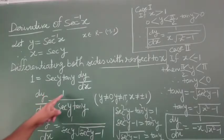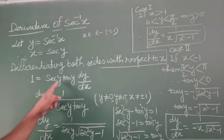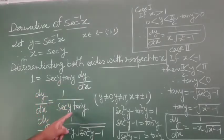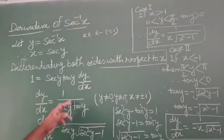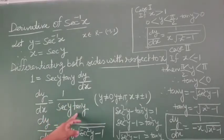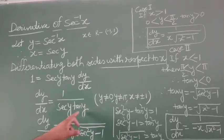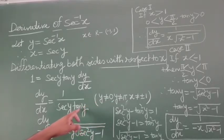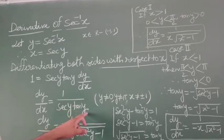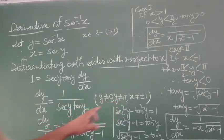dy by dx equals to 1 upon (sec y tan y). Now, tan y should not be equals to 0, which means y should not equal to 0, because we know tan 0 equals to 0. And we also know that tan pi equals to 0, so y should not be equals to pi.